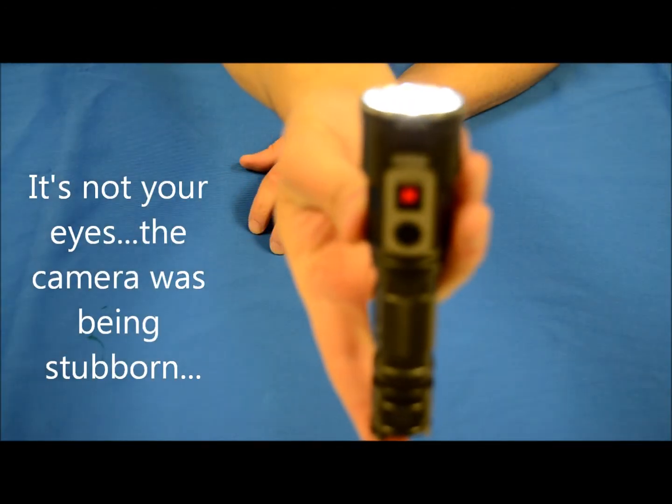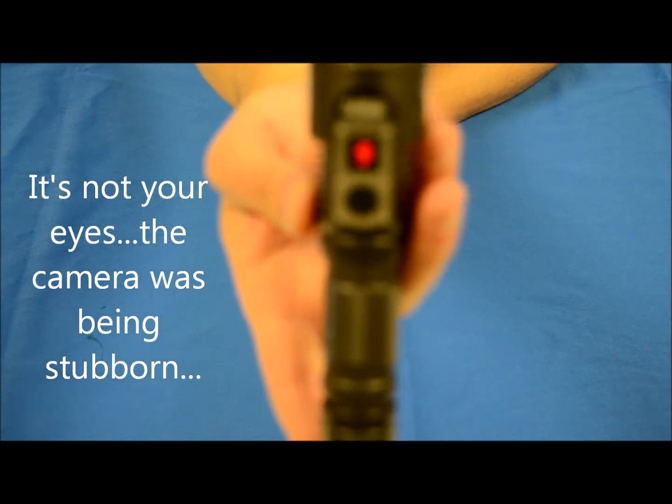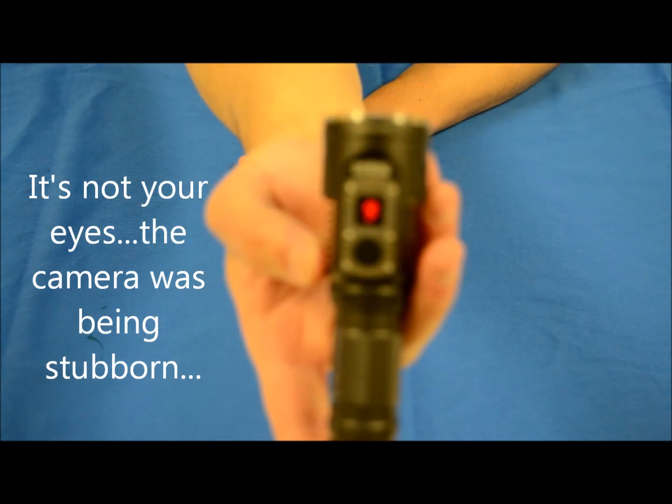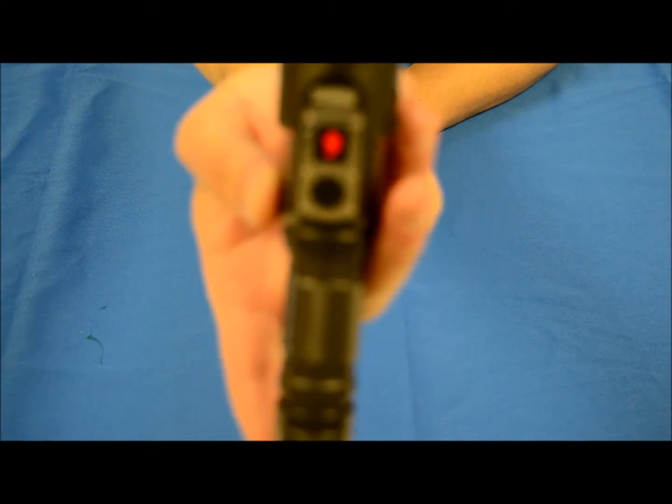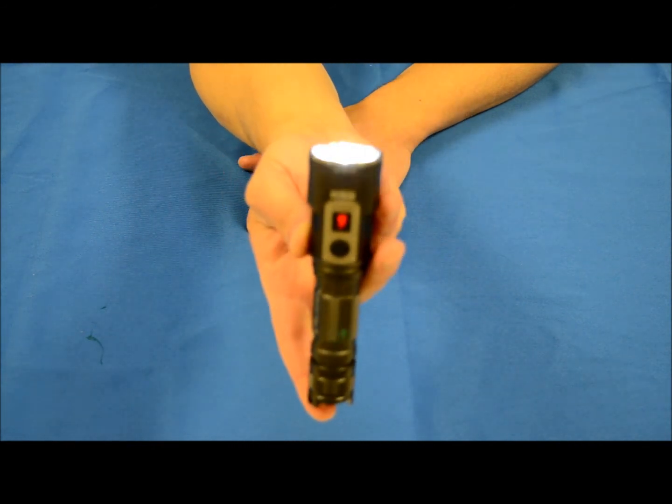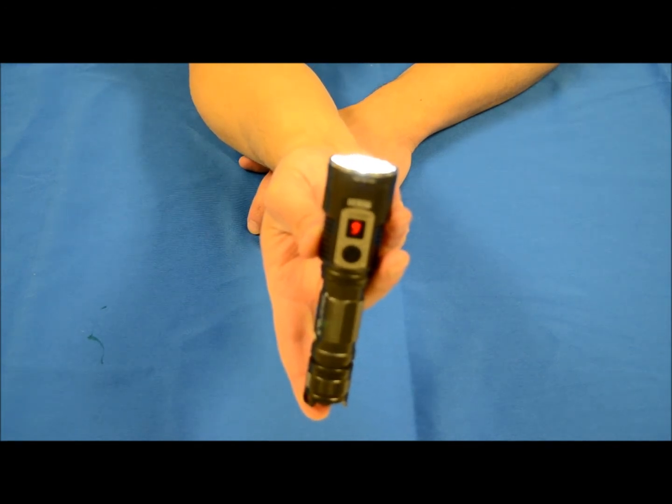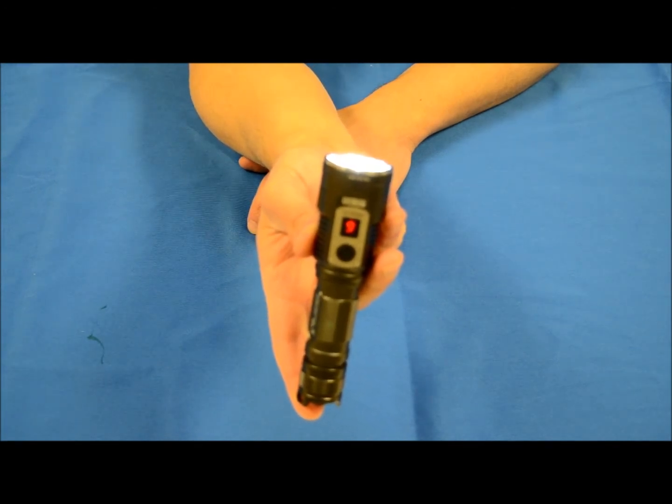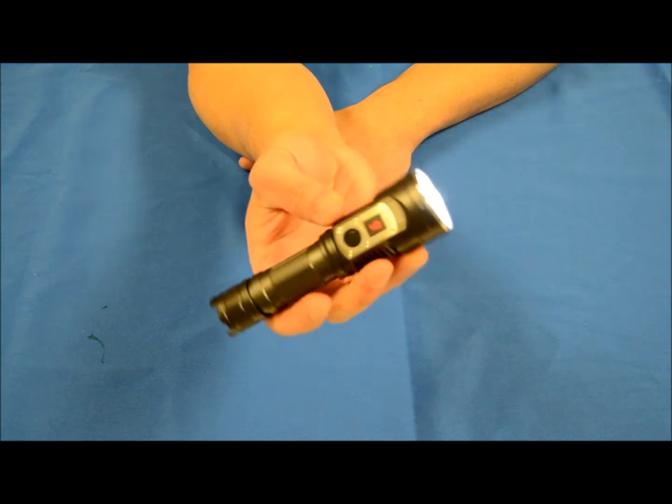The indicator shows H for high and then switches over to a number. So your numbering system goes zero through nine, nine being the battery at a semi-full state of health, zero being you're out of batteries. So whenever the light is on...